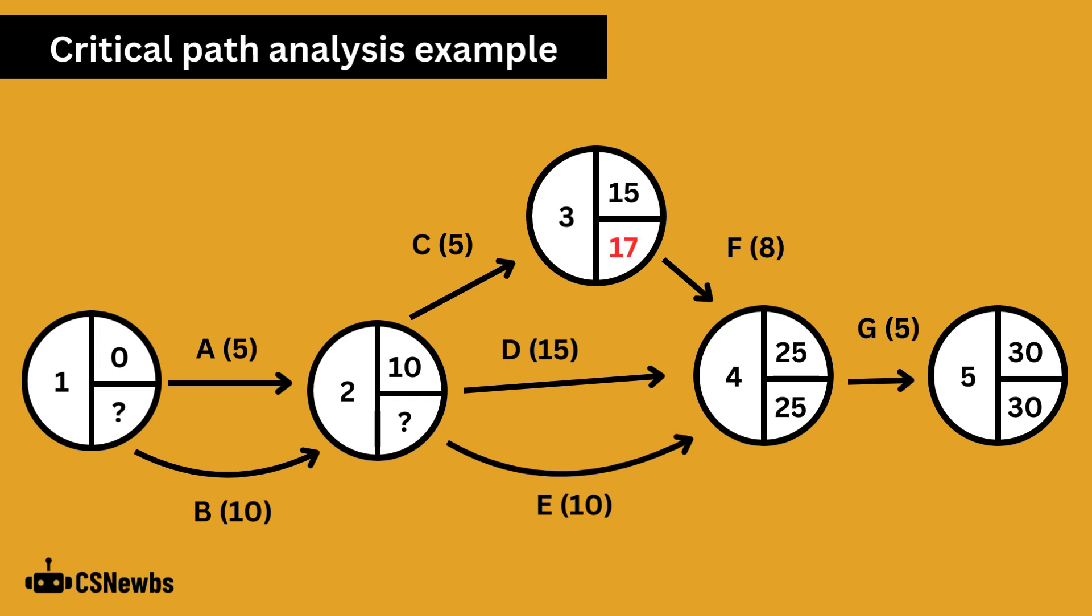Now we look at nodes 4 and 3. From the 25 days of node 4, we can take away the eight days it takes to complete activity F, and that gives a latest finish time for node 3 of 17 days. That wiggle room of two days is called float or slack. If we reached node 3 after 15 days, we'd have two spare days before we must start activity F.